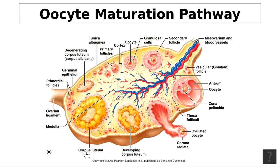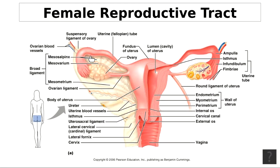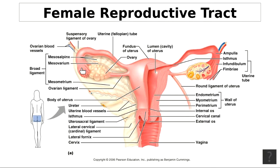Getting back to the profile of the female reproductive tract, there are structures called fimbriae — F-I-M-B-R-I-A-E — finger-like structures that sweep over the surface of the ovaries in search of the ovulated ovum. Around the time of ovulation, they become motile and sweep across the surface of the ovary, trying to capture the egg and channel it into the uterine tube.